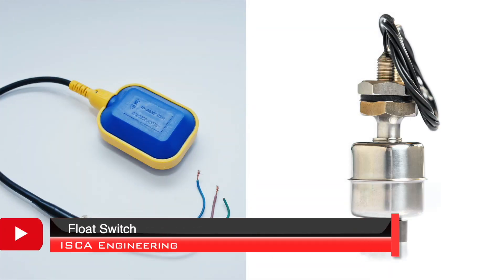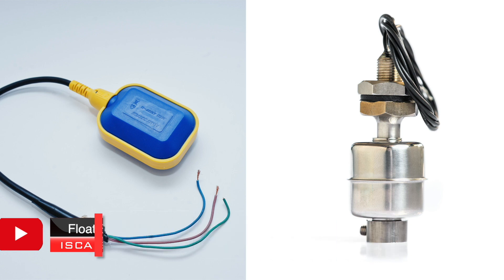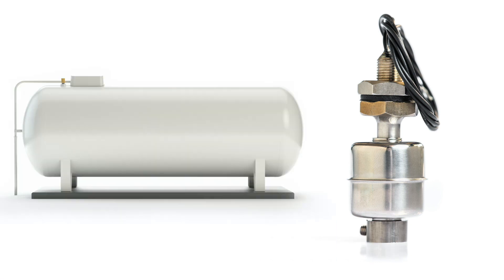Float switches are devices used to detect the level of a liquid. It can provide automatic control for motors that pump liquid from or into a tank. As the level of liquid rises or falls, it will either close or open a circuit respectively.